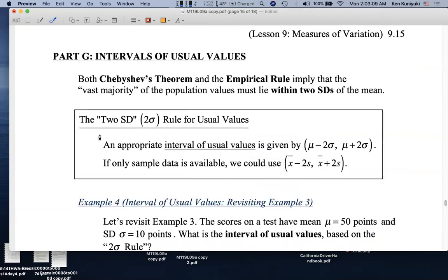So let's talk about the 2sd or 2sigma rule for usual values. An appropriate interval of usual values is given by this interval, this range of values from mu minus 2sigma to mu plus 2sigma, basically the mean minus 2 standard deviations and the mean plus 2 standard deviations.